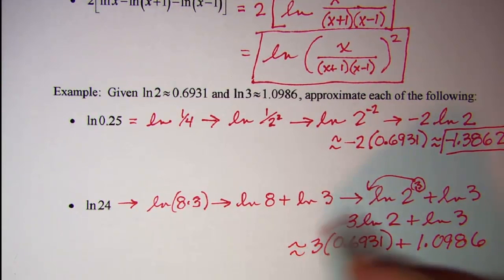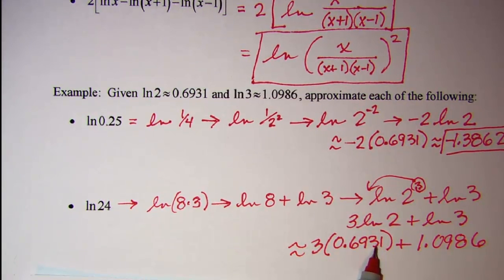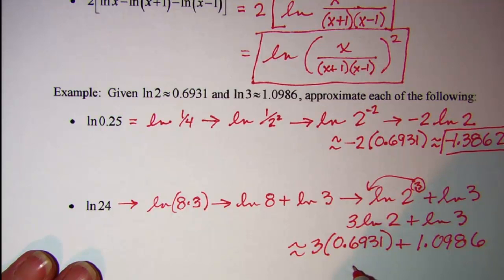So these are approximate numbers. But we have, when we do this math, we get about 3.1779.